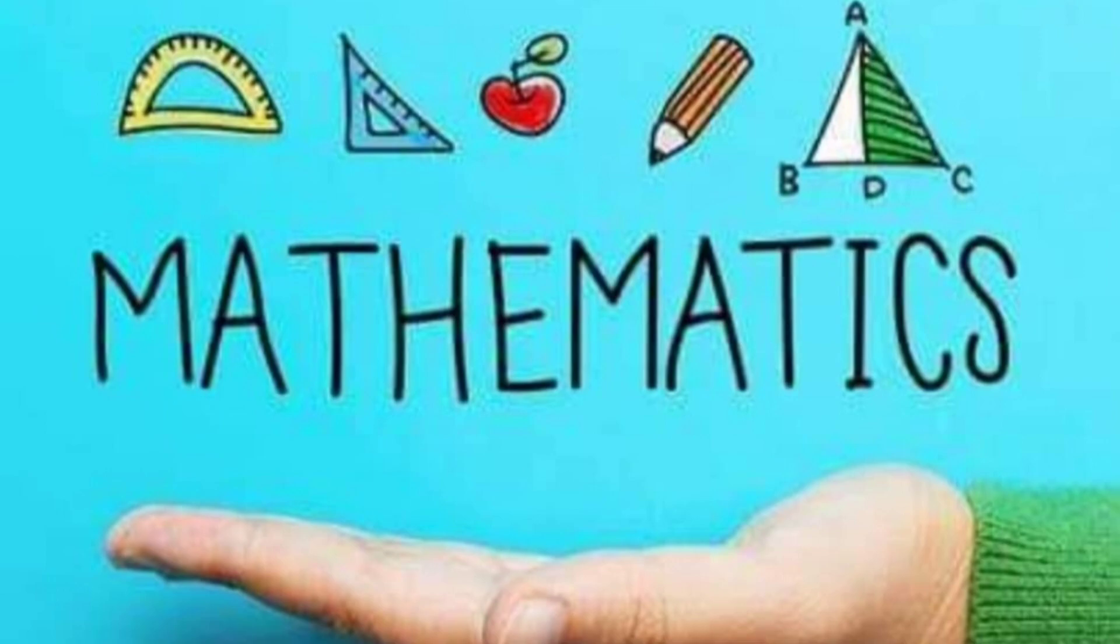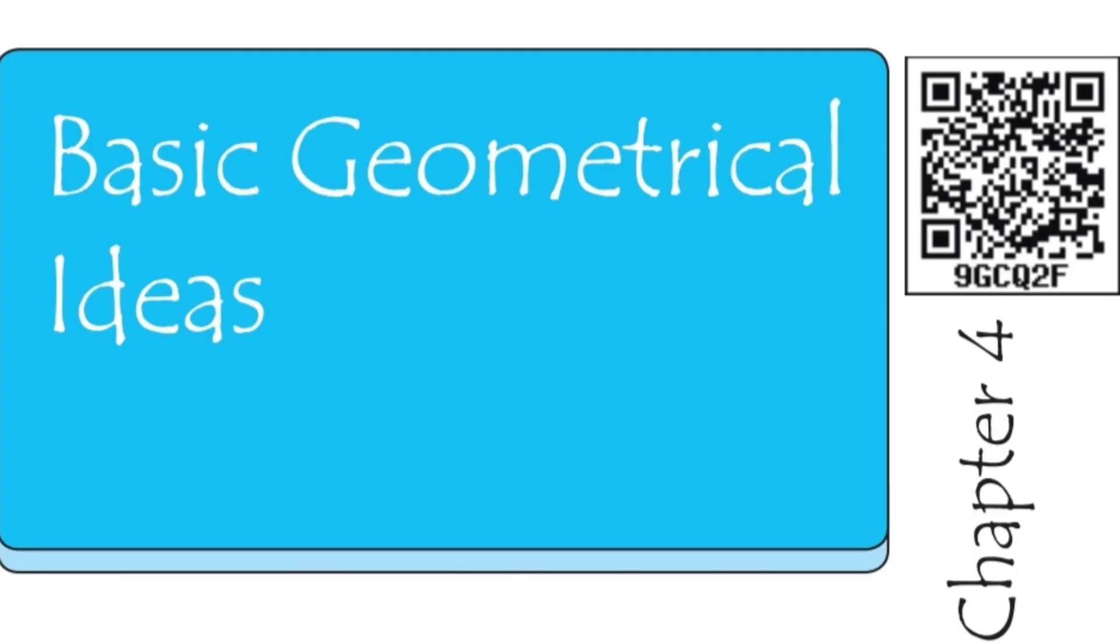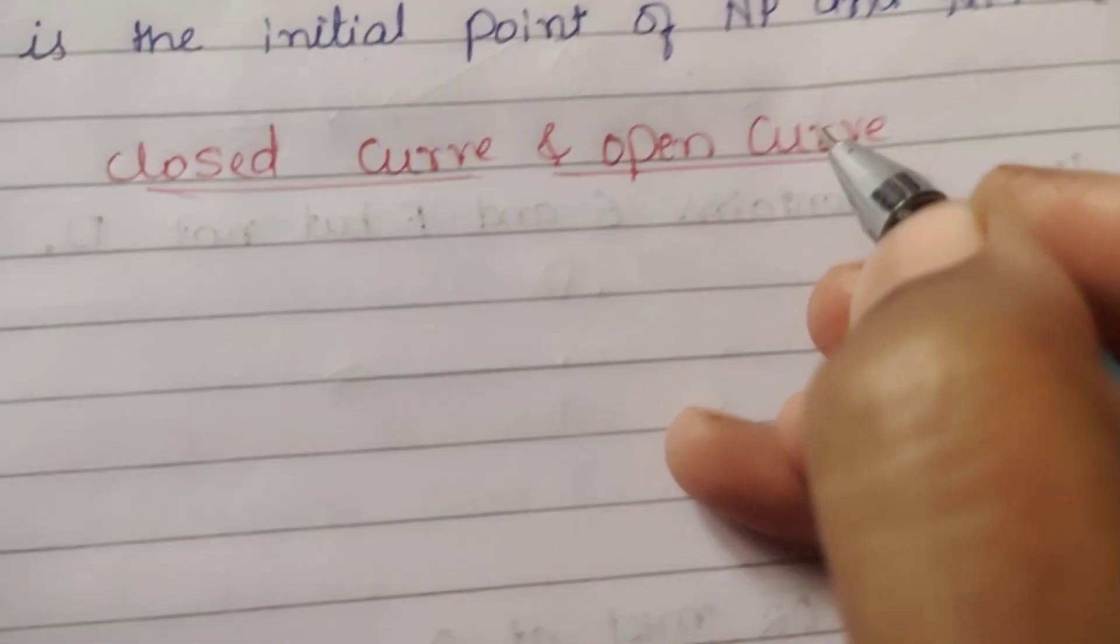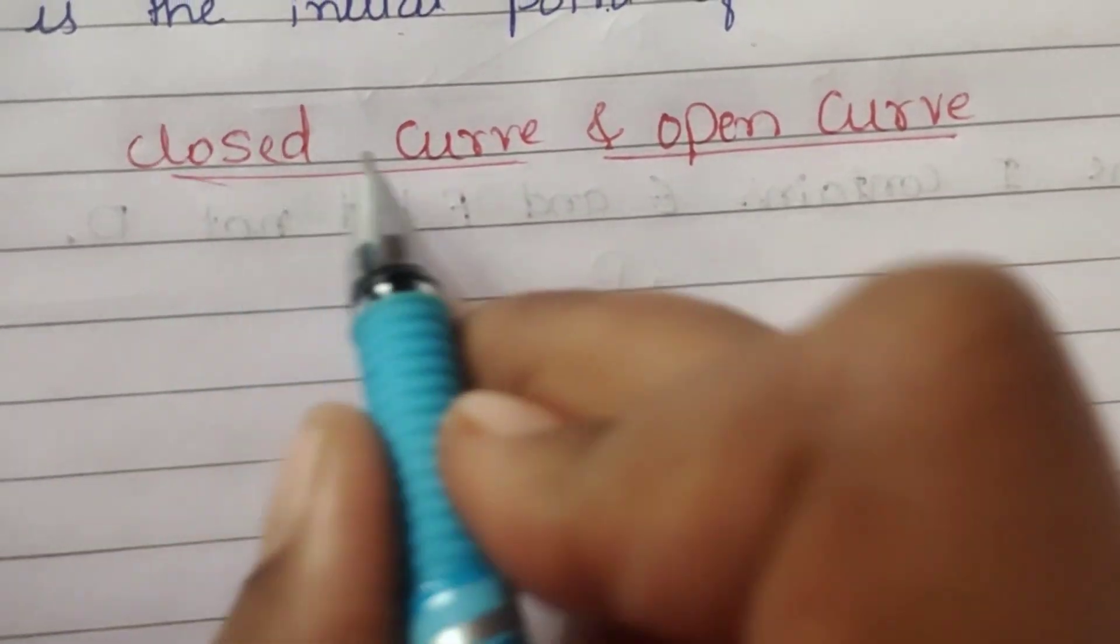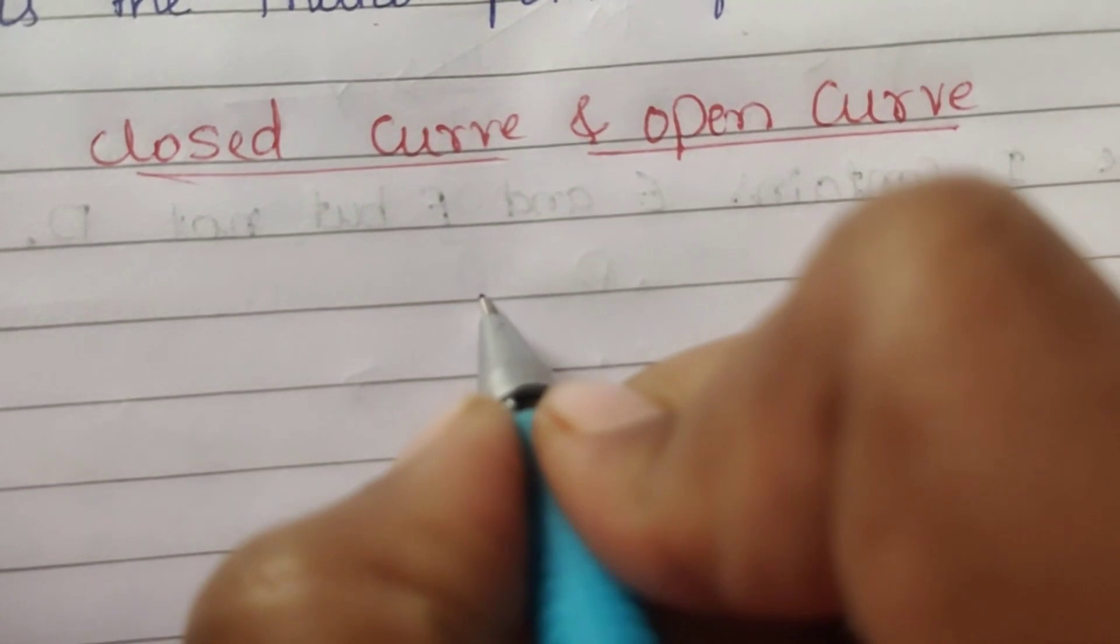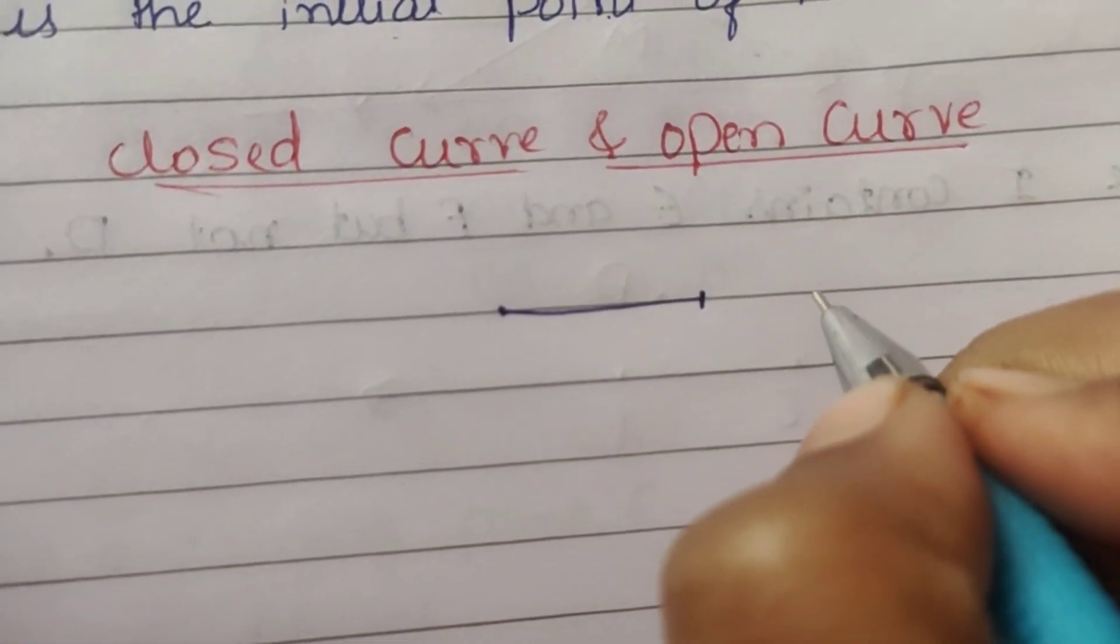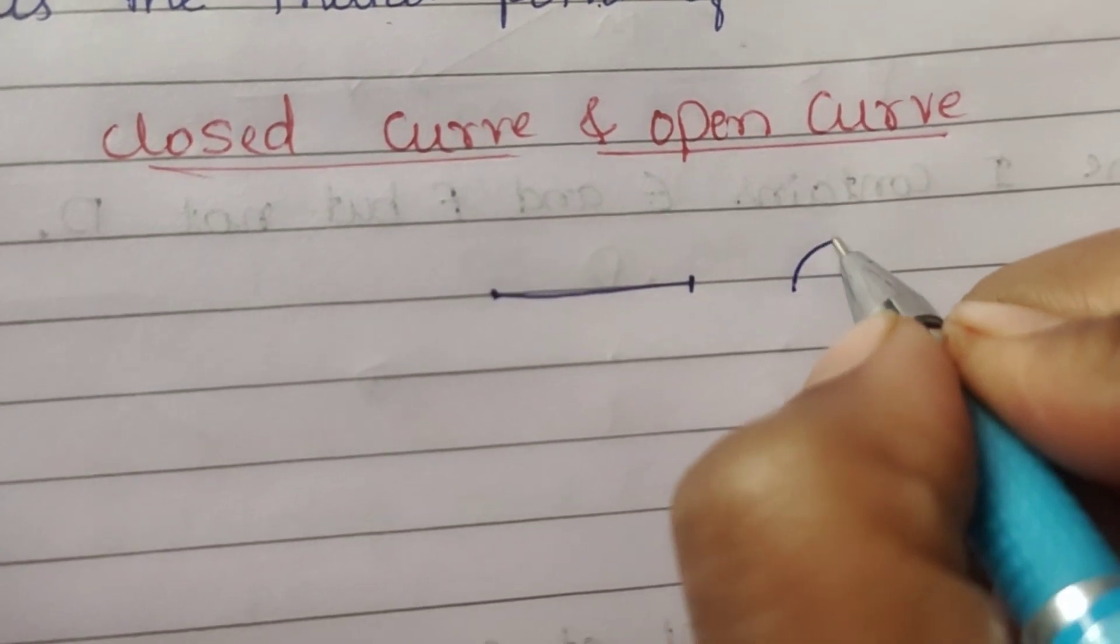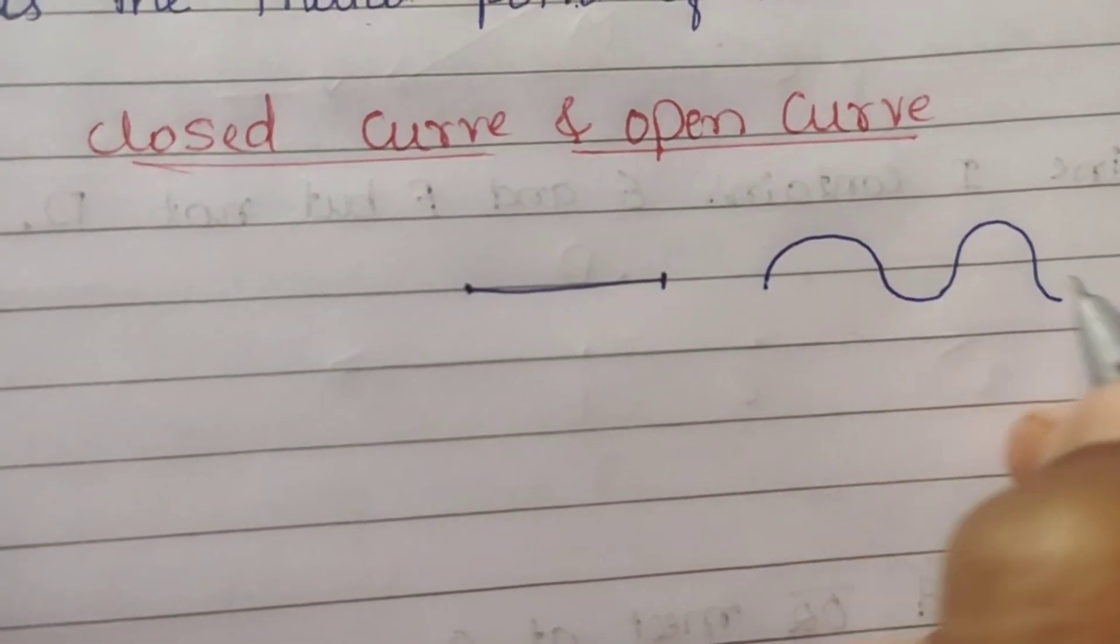Hello everyone, welcome to math class sixth standard part one. Let's continue with the lesson basic geometrical ideas. In this class today we will discuss about curve. There are two types of curve: closed curve and open curve. Last class we covered straight line, line segment, and point. So this curve is not straight, which is not straight.